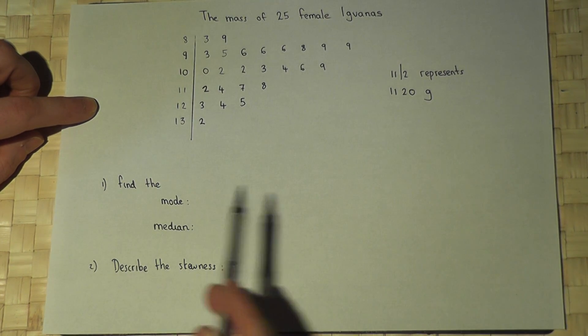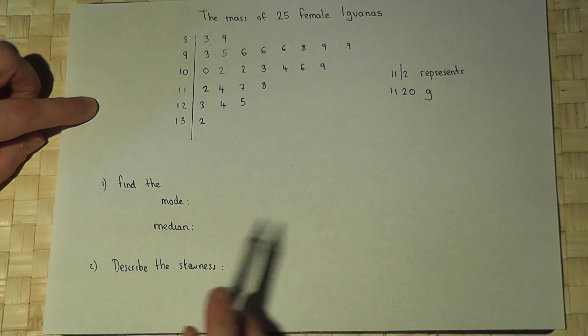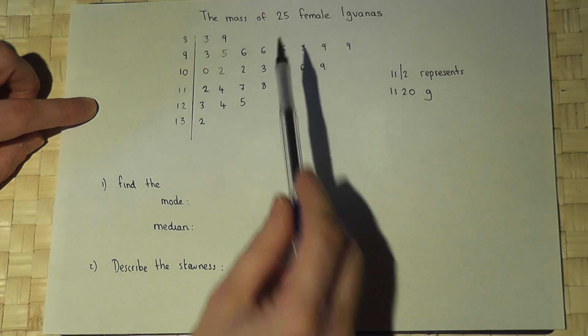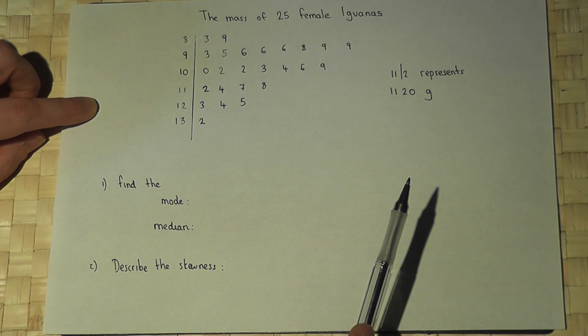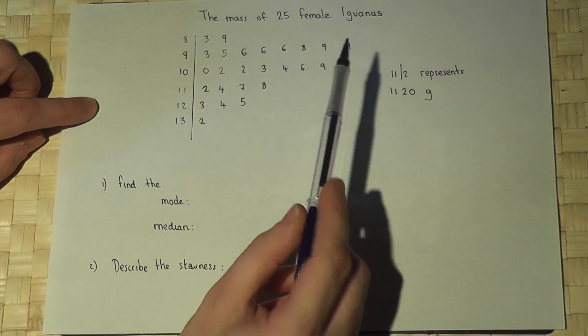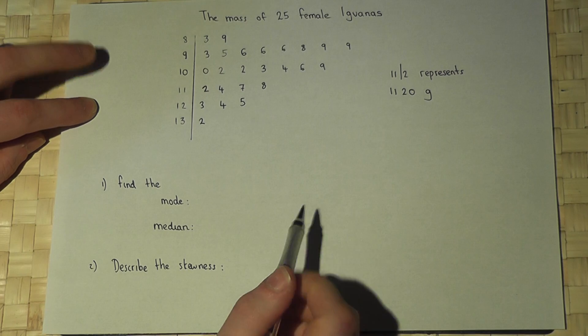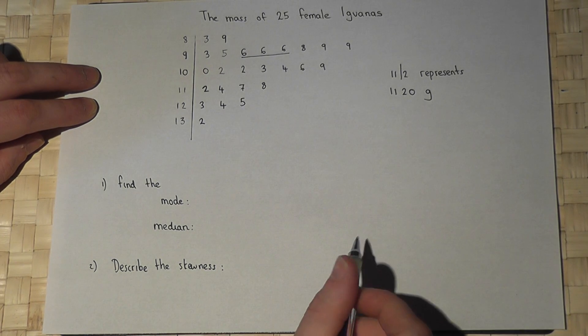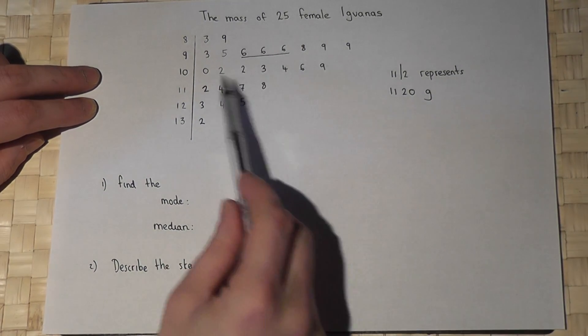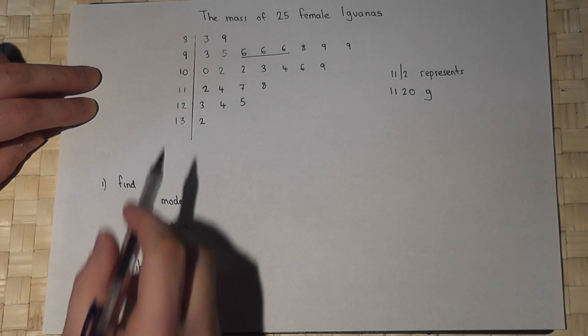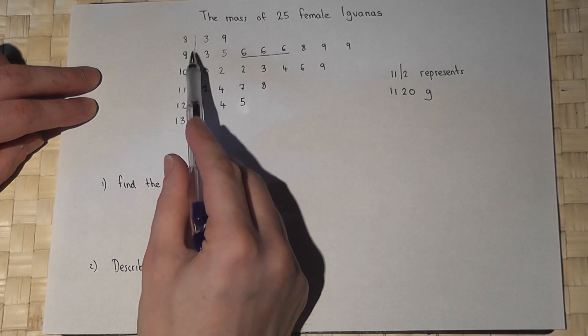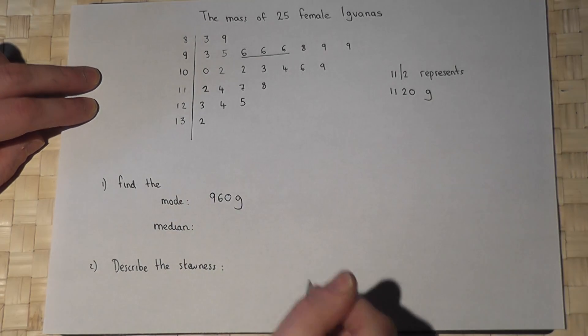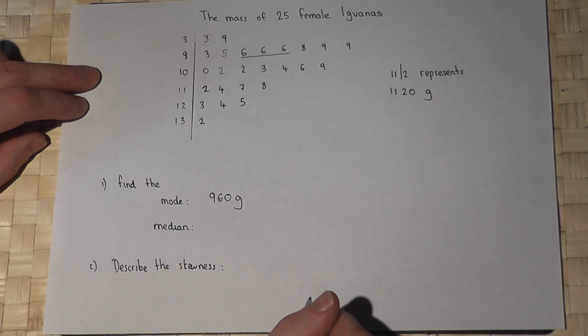Now the question asks what's the mode and what's the median. The mode is the most frequent mass of the 25 female iguanas. If we scan our eyes over the diagram, we observe these three sixes here are the most frequent number within any given leaf. So the most frequent mass is 9-6, which represents 960 grams, so the mode is 960 grams.